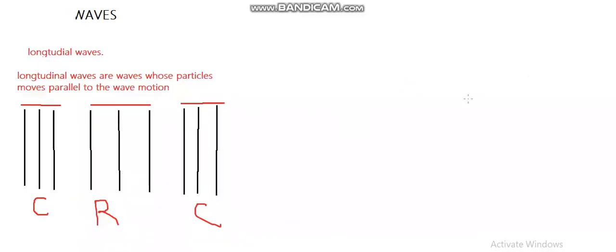Then the other type of a wave is a longitudinal wave. These are longitudinal waves whose particles move parallel to the wave motion. So the wave motion is going in this direction, also the particles are going in the same direction. Now a longitudinal wave is divided into two. It has got two parts: the C part and the R part.